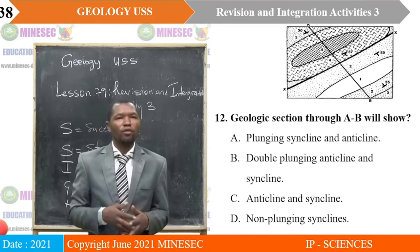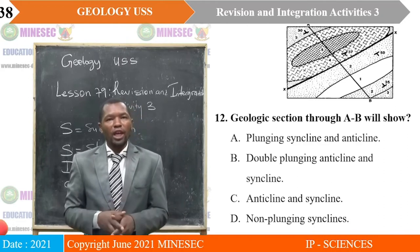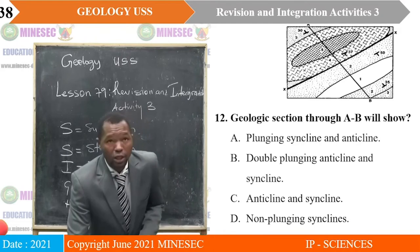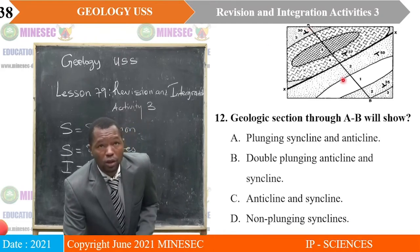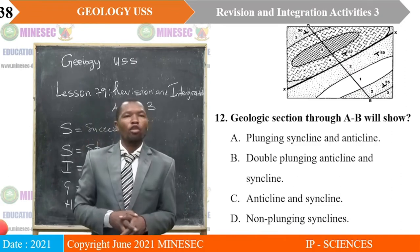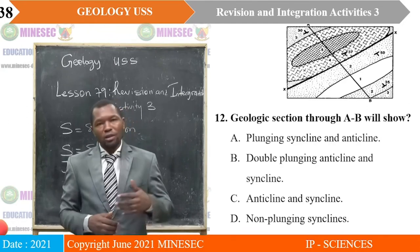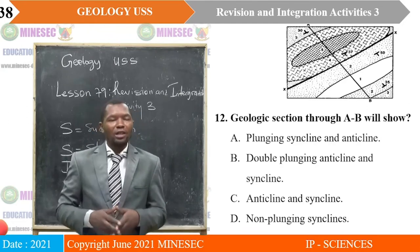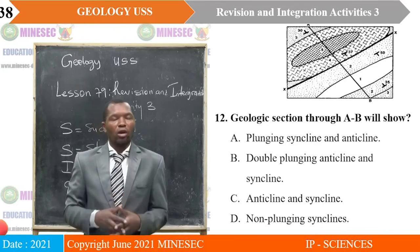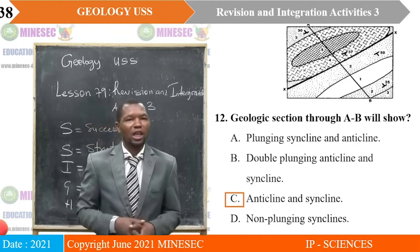Question 12: Geologic section through A and B will show — remember we said this is an anticline, and this should also be a syncline because the dips are towards each other. A — plunging syncline and anticline; B — double plunging anticline and syncline; C — anticline and syncline; D — non-plunging synclines. The correct answer is C, anticline and syncline.